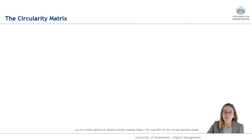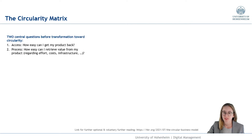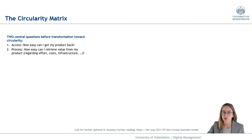Now let's have a look at the so-called circularity matrix. When building this matrix, we have to ask ourselves two central questions before we transform towards circularity. The first question is: how easy can I get my product back? The second question is: how easy can I retrieve value from my products?